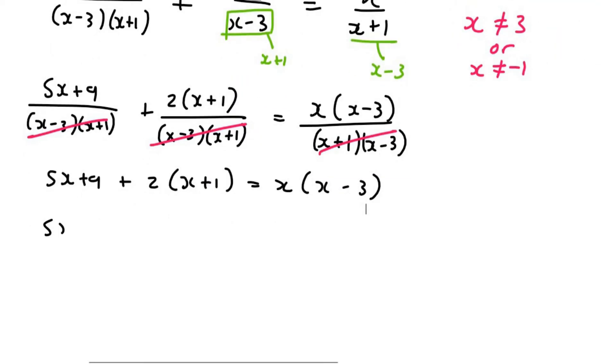So now it's going to give us 5x plus 9 plus 2x plus 2 equals to x squared minus 3x. I'm then going to take everything to the right. So it's going to become minus 5x minus 9 minus 2x minus 2. And now we can simplify. It's going to give us minus 10x and then minus 11.